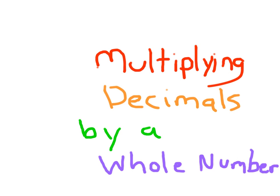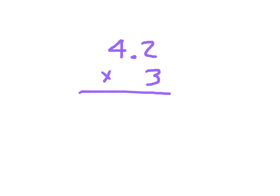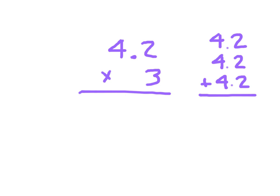Multiplying decimals by a whole number. This here is read 4 and 2 tenths times 3. If we think about this, multiplication is just repeated addition. So we would be looking at 3 of those 4 and 2 tenths — three sets of 4 and 2 tenths.